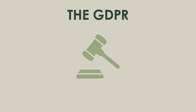Principle one: all processing of personal information must be done lawfully, fairly, and in a transparent manner for the people whose data is being processed. In practice, this means that data processing needs to happen in accordance with one of the GDPR's stated lawful purposes — which includes things like the people whose data is being processed having given their informed consent, or the data being processed to perform a task in the public interest. This is essentially why every website started popping up windows a few years ago asking you to explicitly consent to their processing of your data.